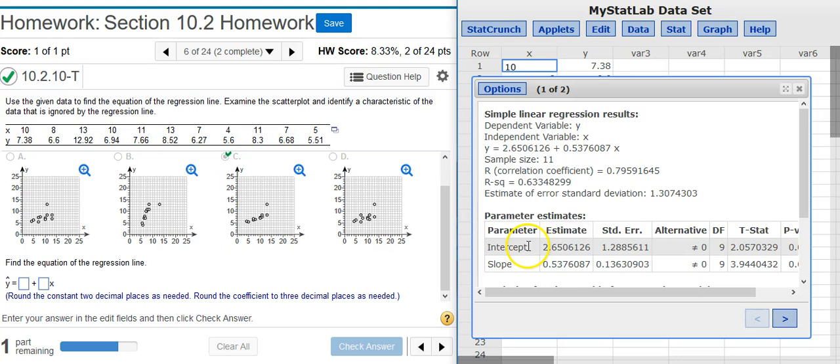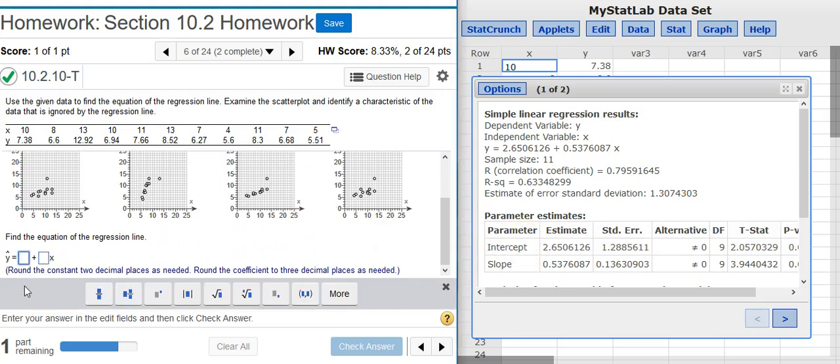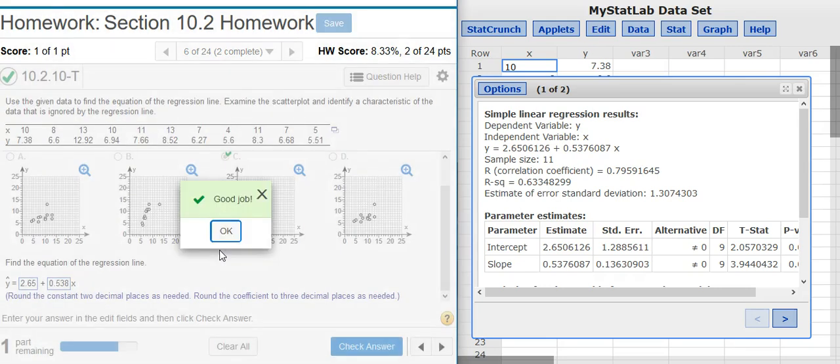You can take them from wherever you want. It's the same number either way. My instructions say to round the constant two decimal places as needed. The constant is the intercept. So, I'm going to round that to two decimal places. And then it says round the coefficient to three decimal places. Coefficient for my x variable is the same as the slope. So, that's the three decimal places. Good job!